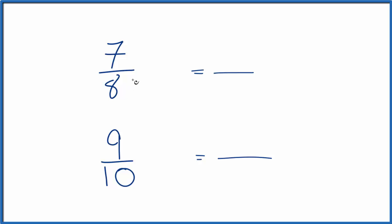I could list all the multiples of 8 and 10, but I think I'm just going to take 8 times 10 because I know that'll be 80, and then 10 times 8. That'll give me 80 as well. So now I have the same denominator.